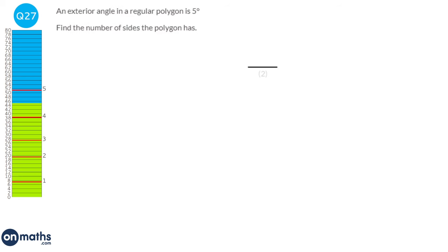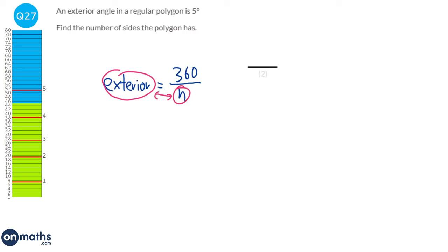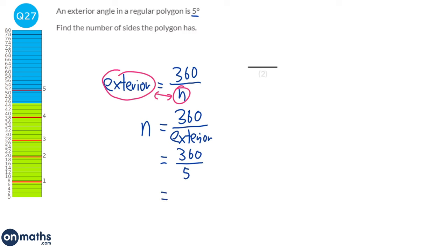We know that the exterior angle of a regular polygon equals 360 divided by the number of sides n. Rearranging, n equals 360 divided by the exterior angle. So we do 360 divided by 5, which gives us 72 sides.